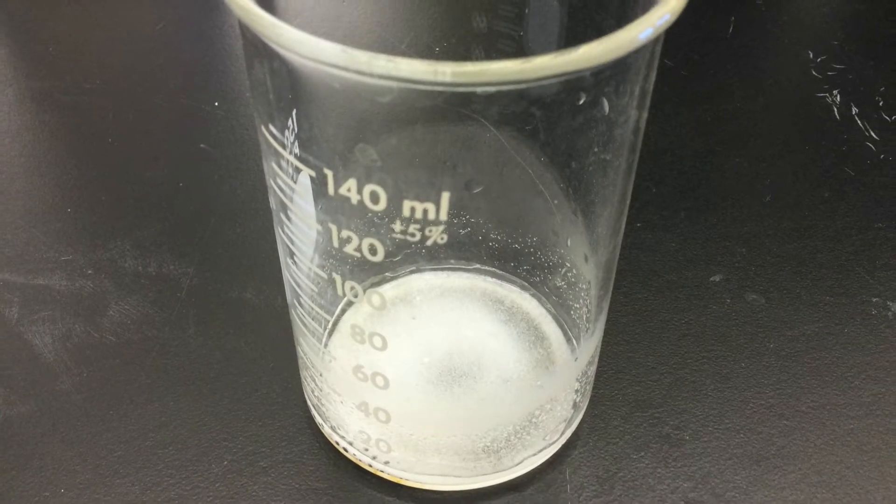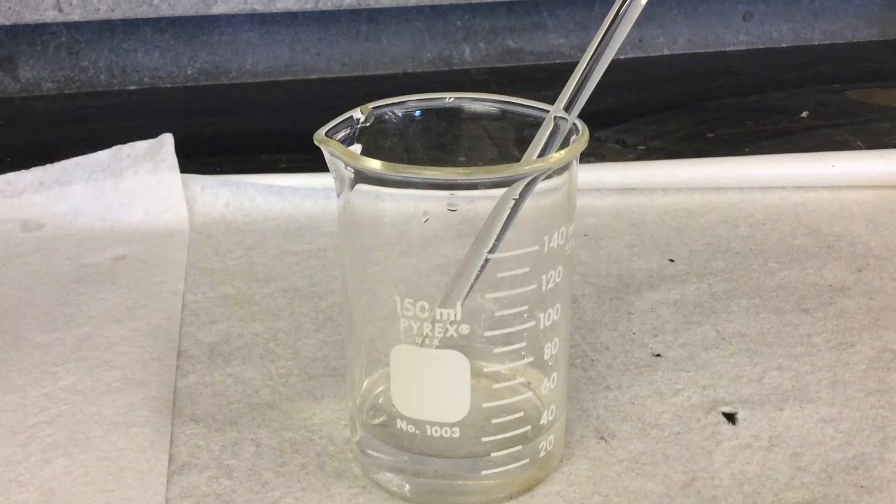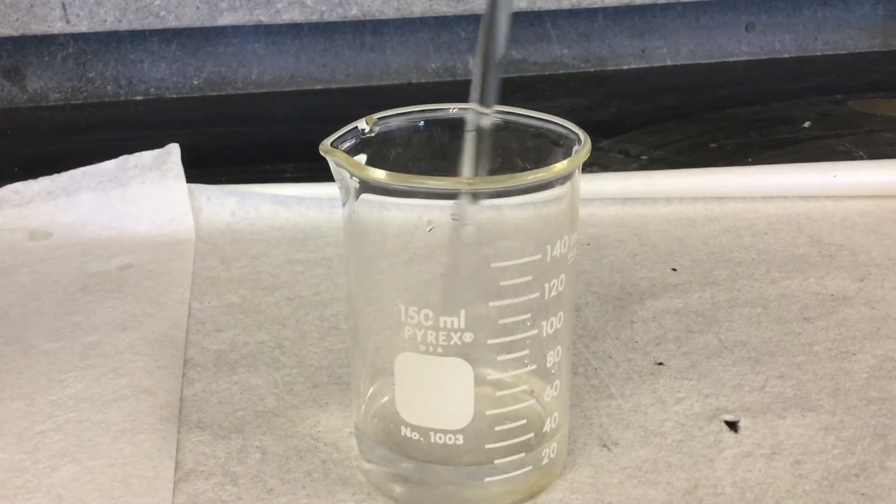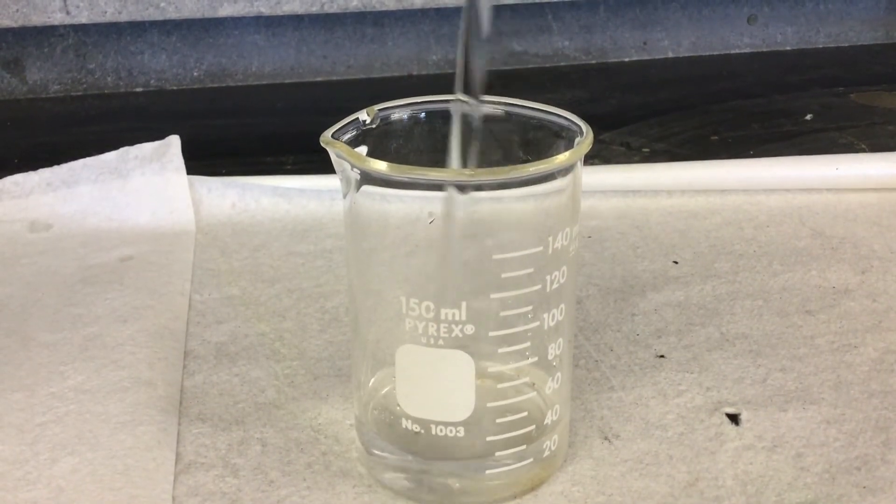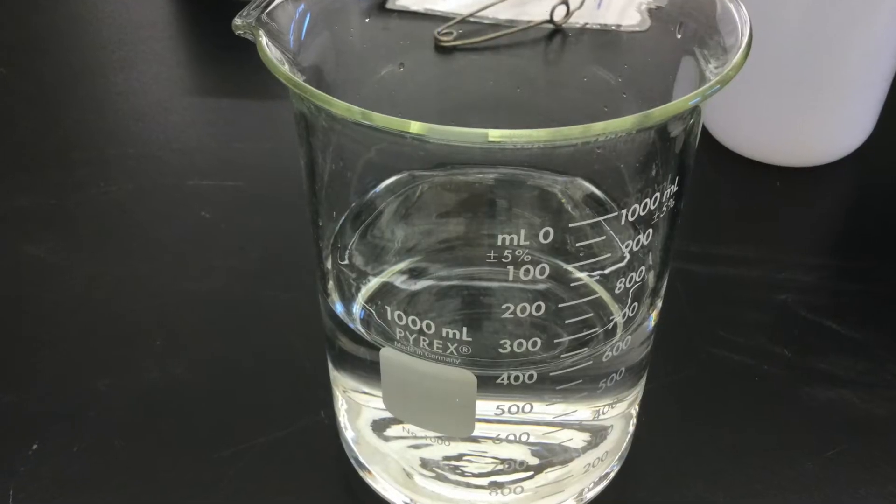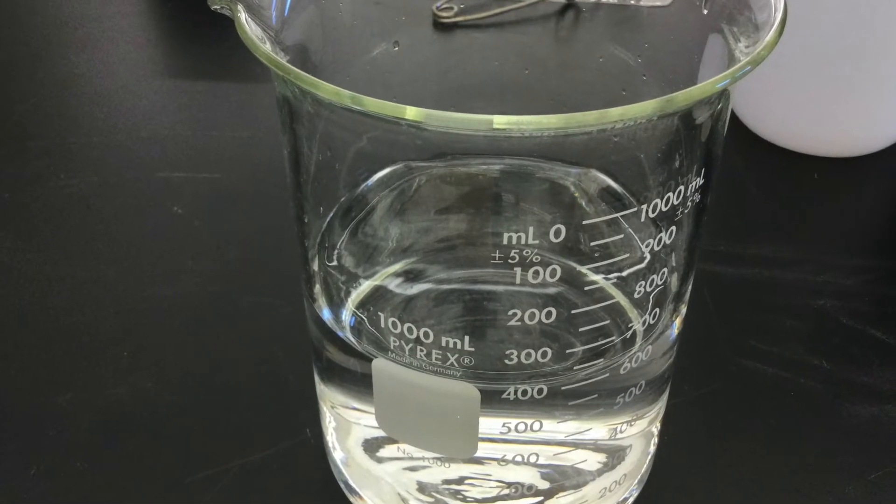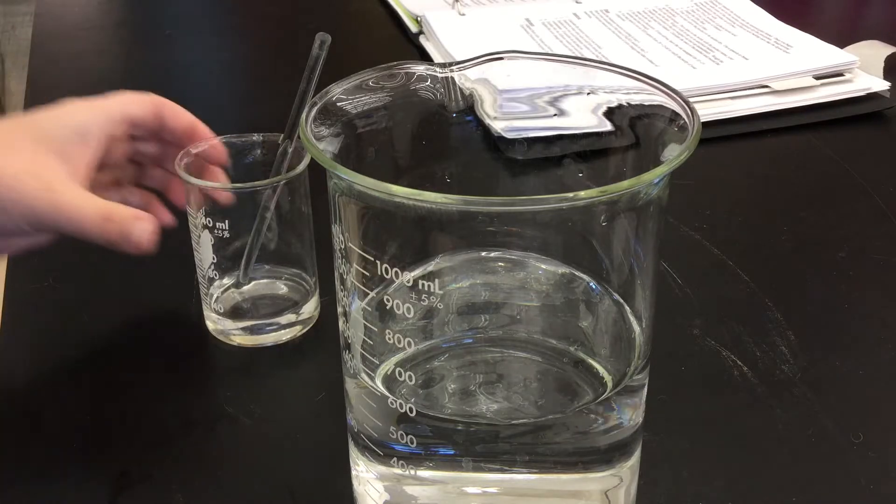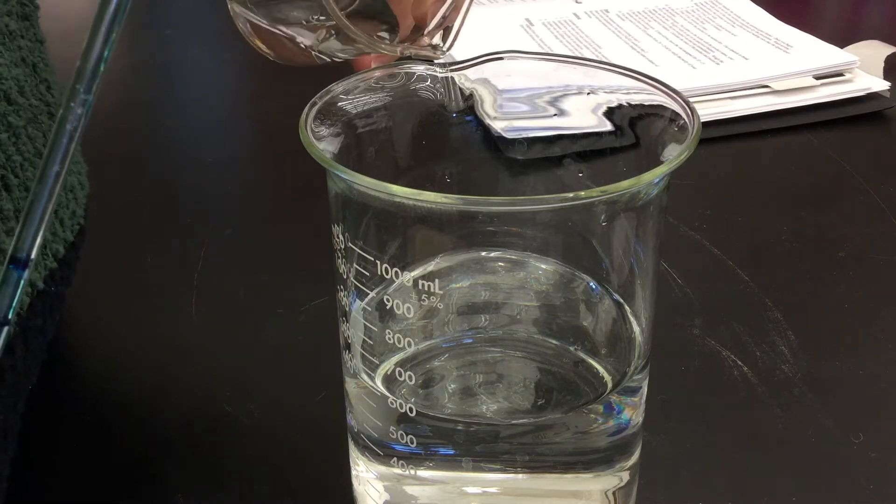Begin by preparing the sulfurous acid. You're going to need to weigh out 1 gram of sodium sulfite and add it to a small amount of concentrated hydrochloric acid.